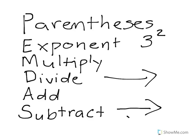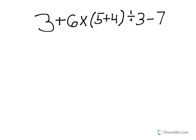So let's take a look at how this boils down as we solve some problems. So we have this big, long problem here. Probably should have started with something smaller, but we'll go with it. We have 3 plus 6 times 5 plus 4 in parentheses divided by 3 minus 7.